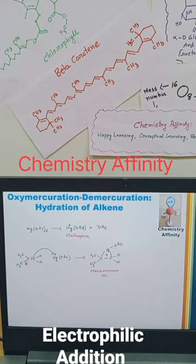The alkene double bond attacks the electrophile and a mercurinium ion forms — similar to a bromonium ion. Then the carbon-mercury bond breaks in such a way that we get a stable carbocation.